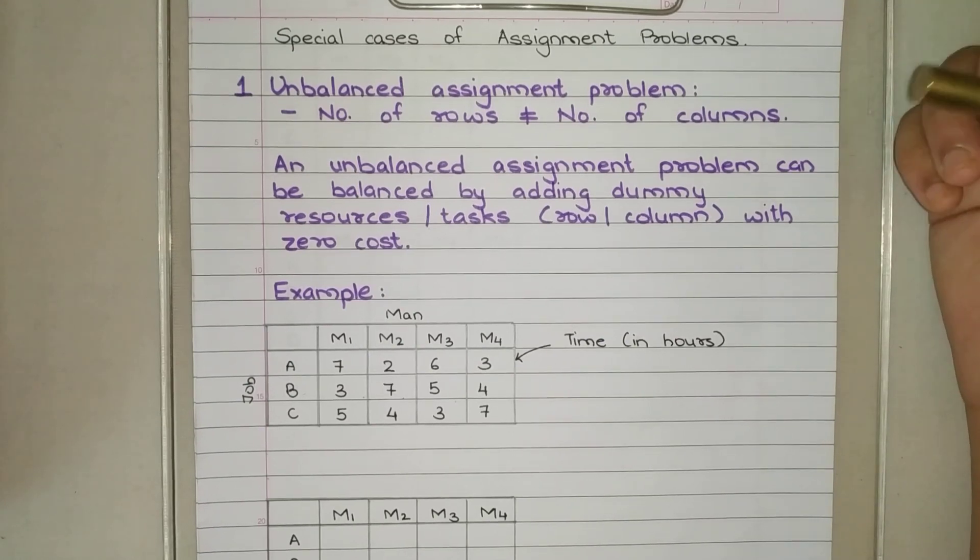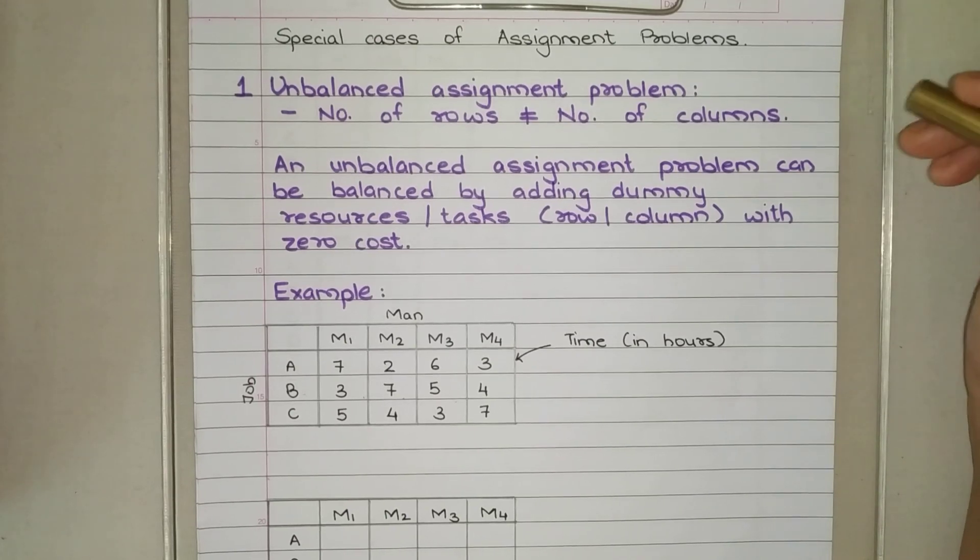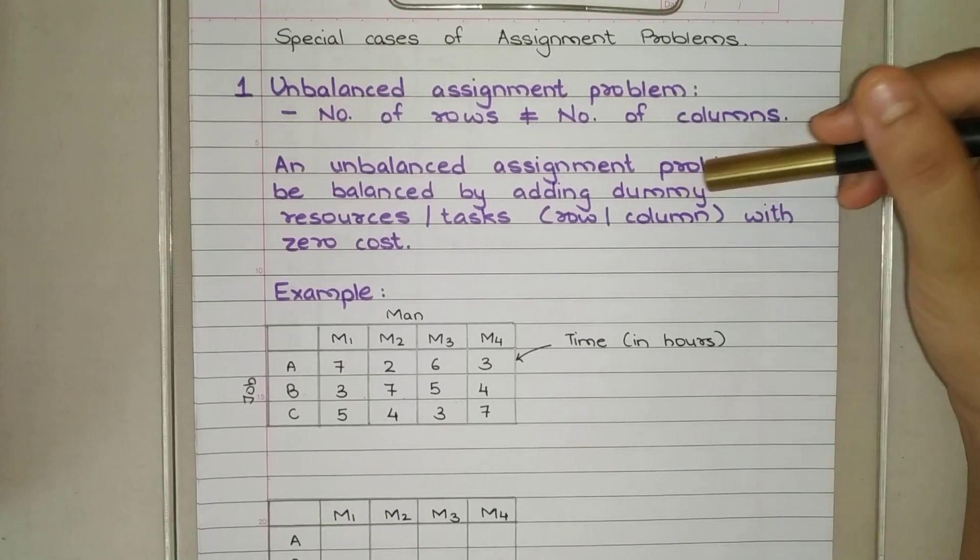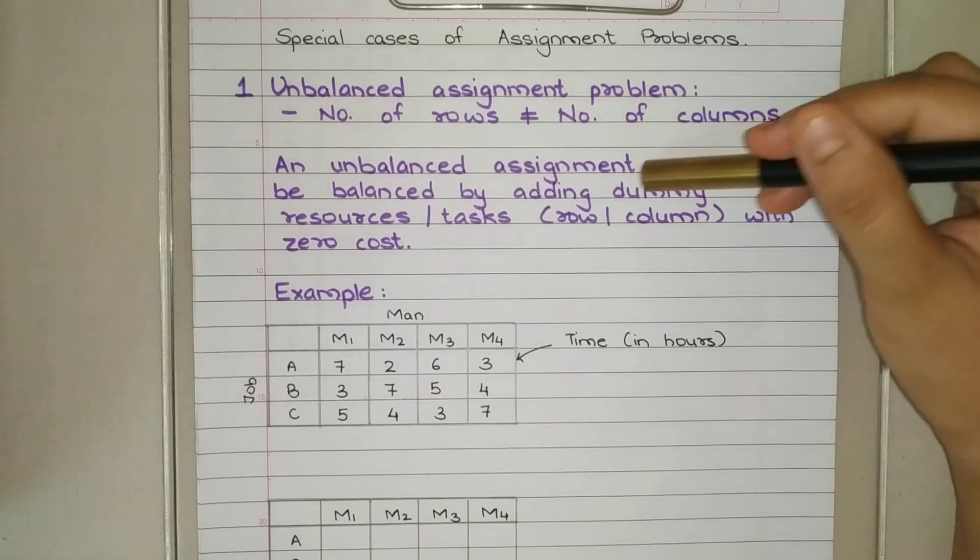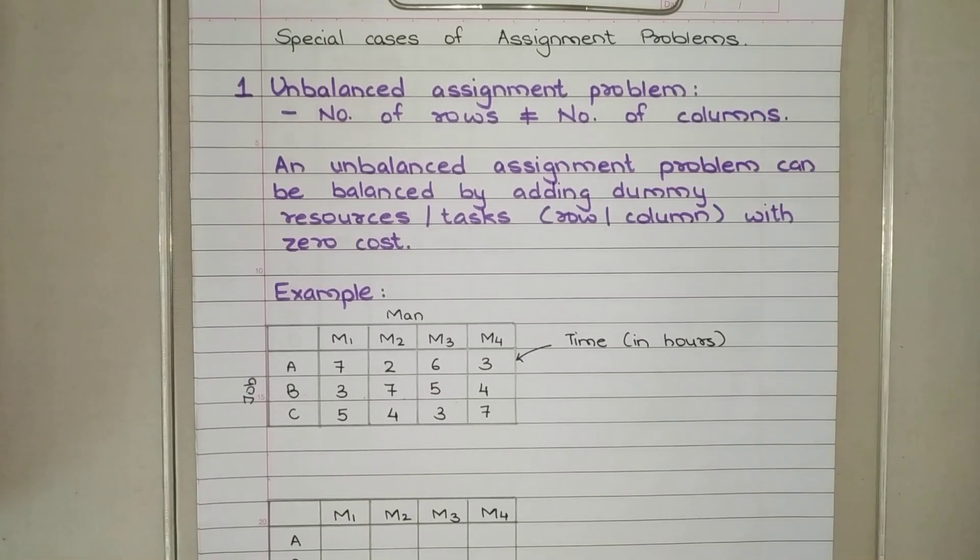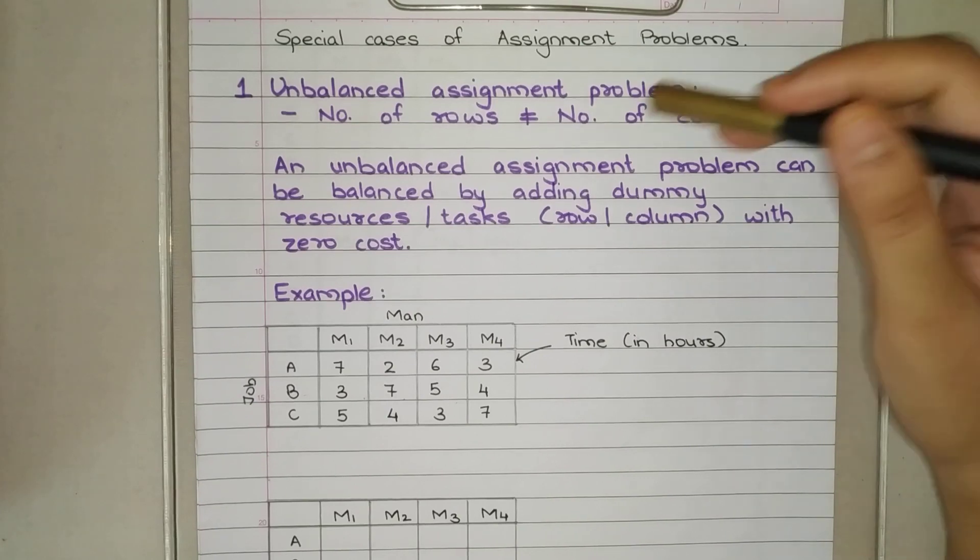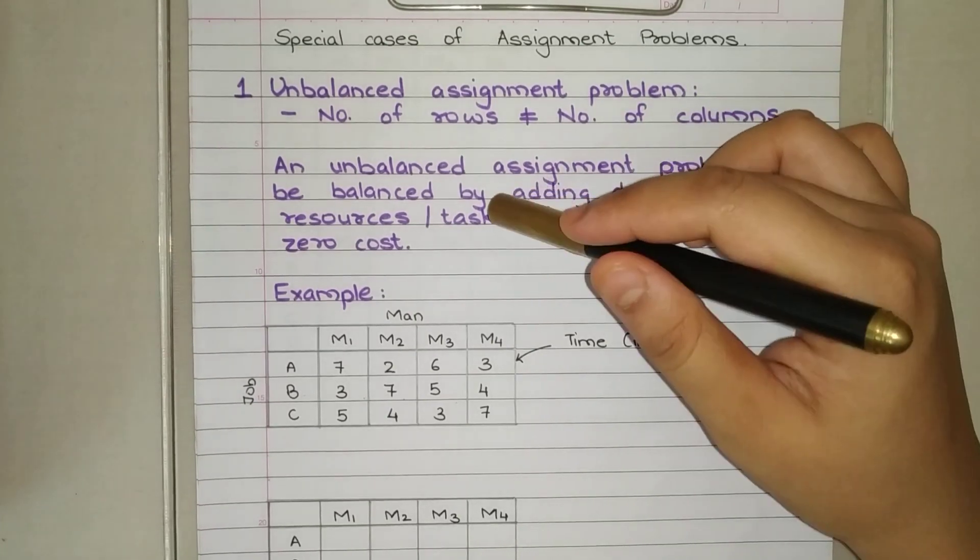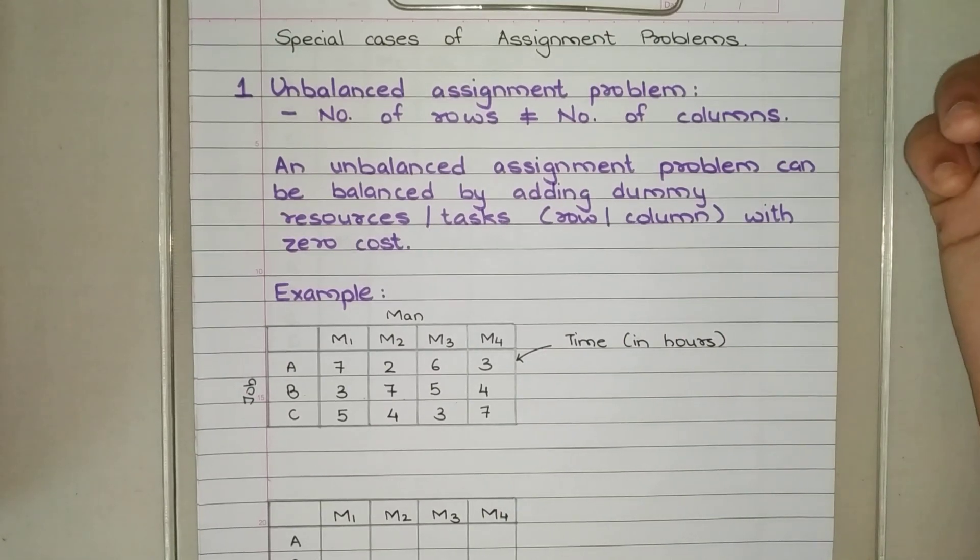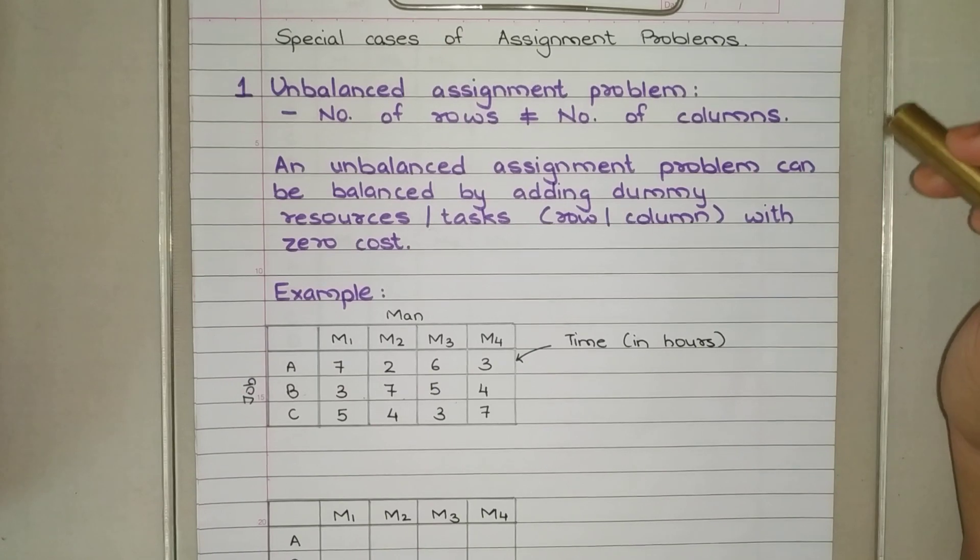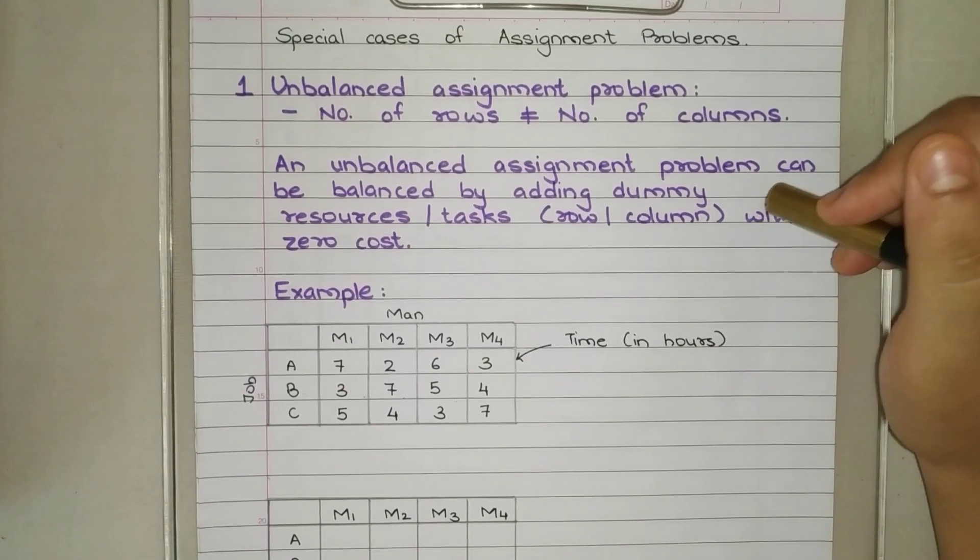How to solve this? If we have more men and less work, then we will add extra work. And those are not real jobs, we added them ourselves, so we call that as dummy jobs. If we have more jobs and fewer men, then we will add dummy men. When we add these, we also have to fill in some cost.